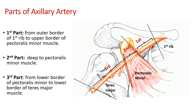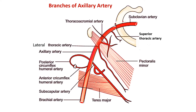The branches of the axillary artery follow a simple rule: the first part gives one branch, the second part gives two branches, and the third part gives three branches. The first part gives the superior thoracic artery, which supplies the upper part of the thoracic region.